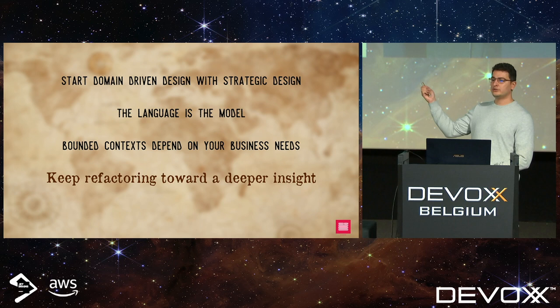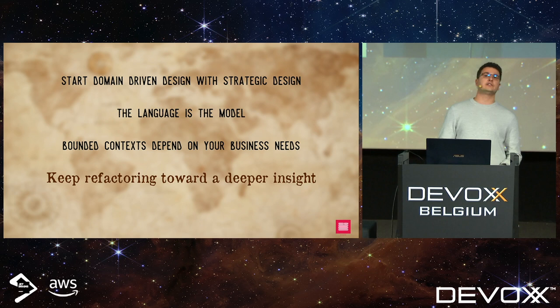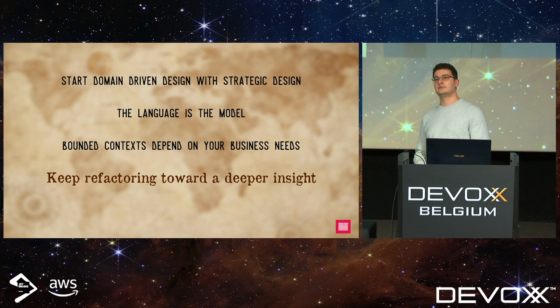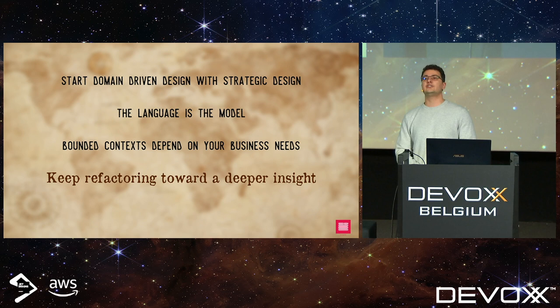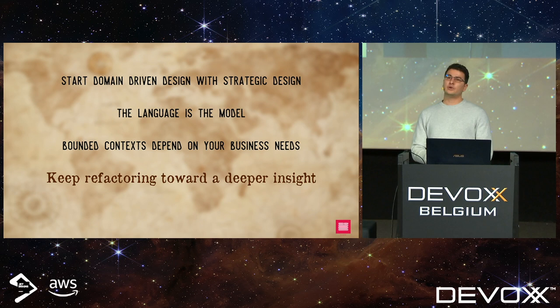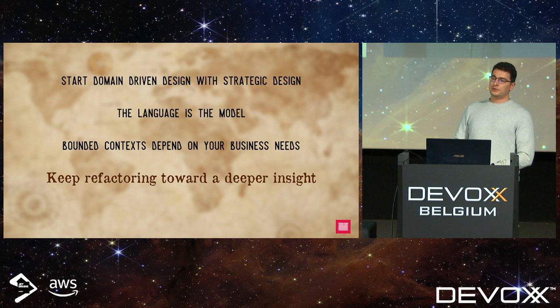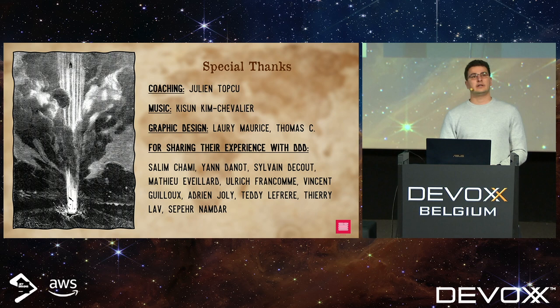In conclusion: start domain driven design with your strategic design — this is what will allow you to avoid the wrong battle, focus on the important parts, and avoid exhausting yourself with tools not adapted to your situation. You need to understand that your language and your model are deeply linked — they are the same thing — and so communication is extremely important. Finally, the way you split your bounded contexts depends on your business needs. There's no right way to do this; if you need to evolve, your split will have to evolve as well, and there's no template. Don't be afraid of iterating on your strategic choices just like you do with tactical ones. Keep refactoring toward a deeper insight. Thank you very much.